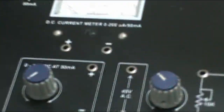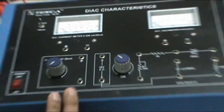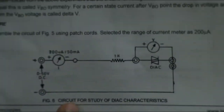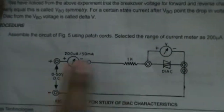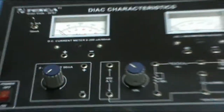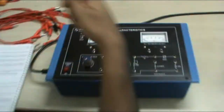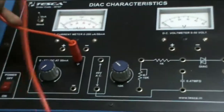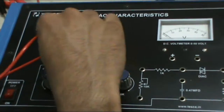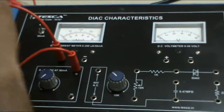Now to plot the VI characteristics of the Diac, first I will make the connections as shown in figure 5. This is the forward characteristic circuit. First, connect the positive lead to the M meter positive.